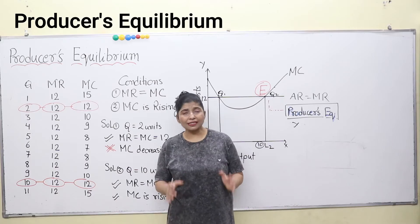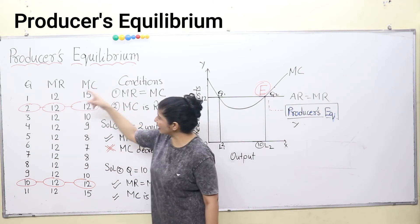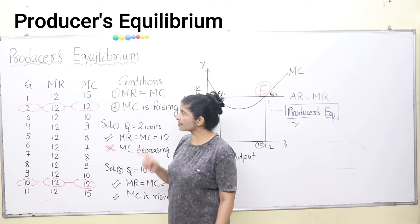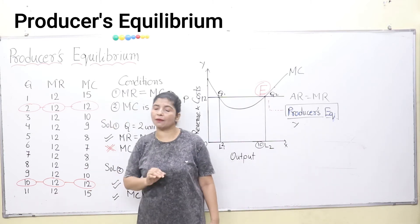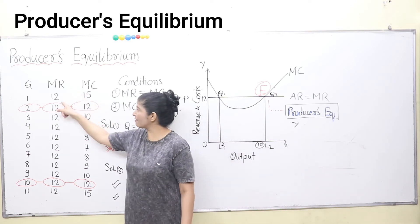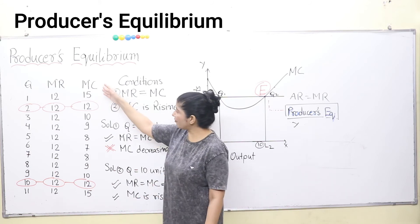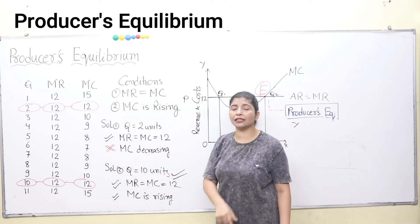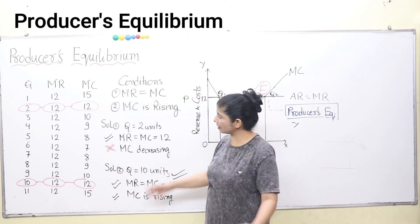Let's see our diagram and the diagrammatic presentation of producer's equilibrium. We need a schedule. The schedule has quantity from 1 to 11. We are discussing producer's equilibrium in a perfectly competitive market, so marginal revenue and average revenue will be the same, and the curve is horizontal to the x-axis. Marginal revenue will remain constant at 12 throughout. Marginal cost will first decrease and then increase. You can take a screenshot of the schedule — I have taken it from TR Jain and BK — so you can refer to your book as well.